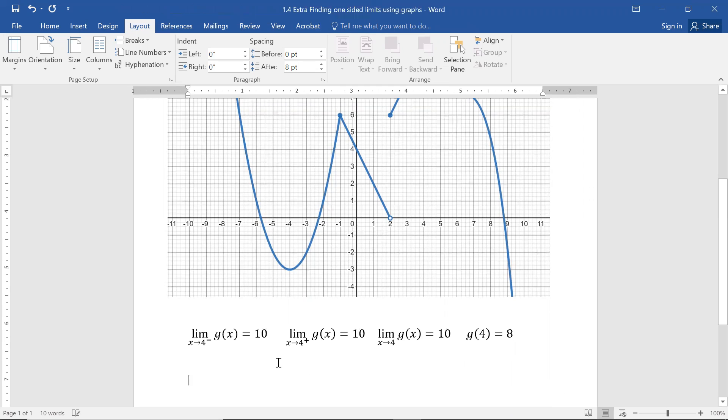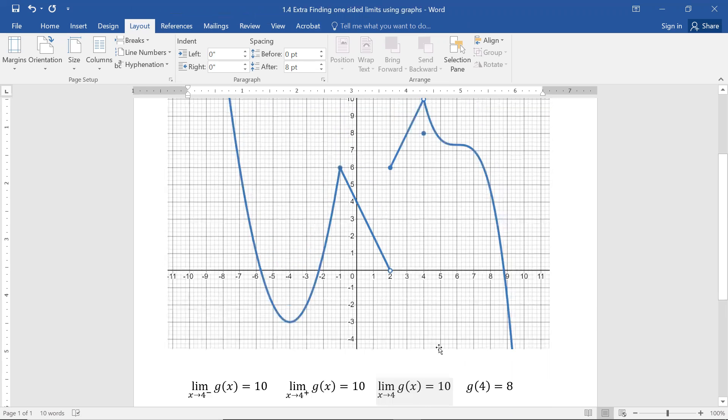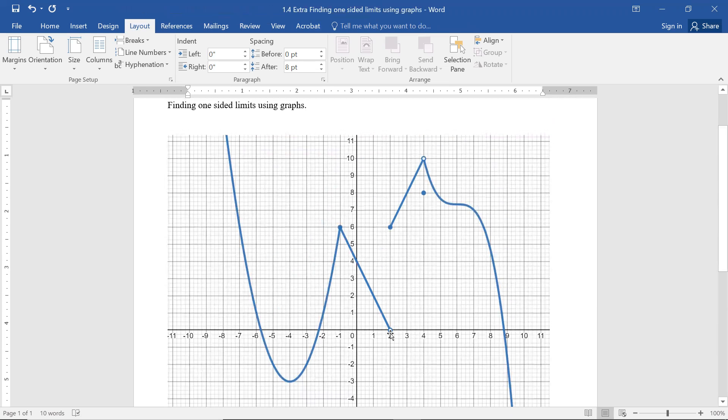This problem, as we can see, has a limit, whereas our previous problem, when we looked at going to 2, did not have a single limit. It had a limit from the left, a limit from the right, but they did not match up. This one, our limit from the left and our limit from the right, match up.